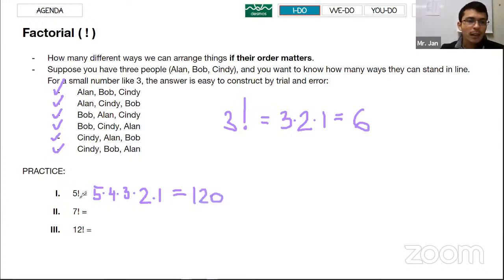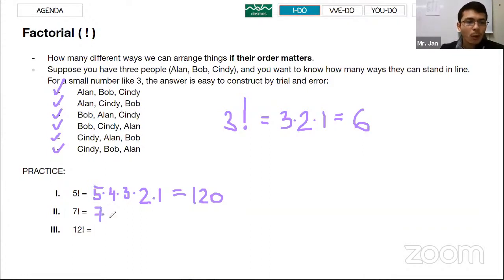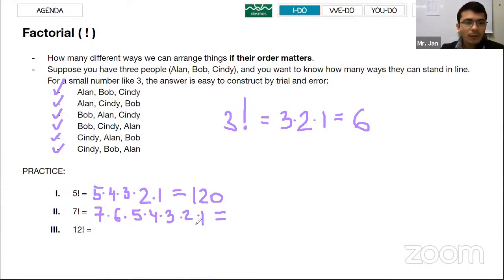Now in my classroom there are actually 7 students, so you need to multiply: 7 times 6 times 5 times 4 times 3 times 2 times 1. Seven times 6 is 42, and you keep going. You need a calculator because the numbers get large quickly.